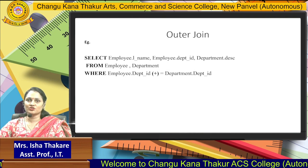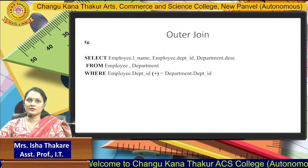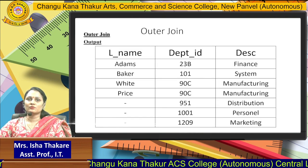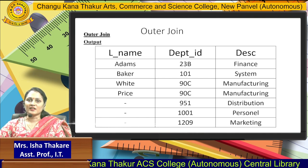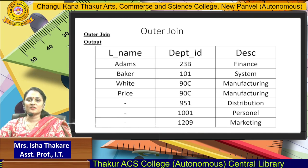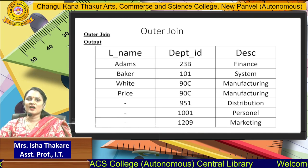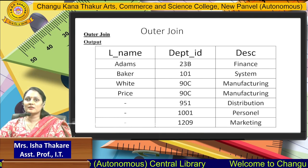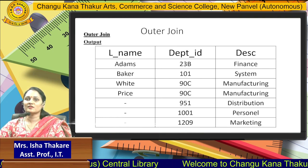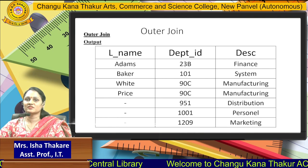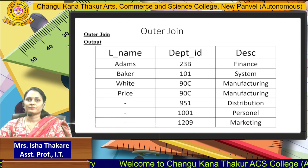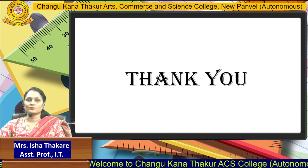This is the outer join example. The output shows LName, DepartmentID, and the description. We have only 4 rows, but the DepartmentID and description values from the other side have also been included. Thank you.